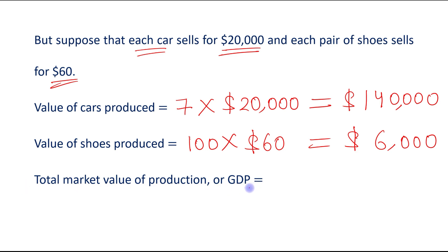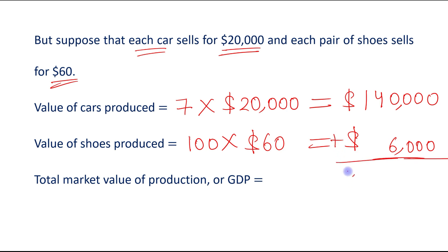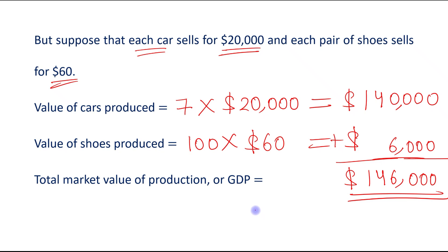What will be the total market value of production, or gross domestic product? Simply add $140,000 and $6,000, which gives $146,000. This is the value of GDP. As we have seen, market value helps us calculate the total value of production. The advantage of using market value is that it allows us to add the production of different goods and services.